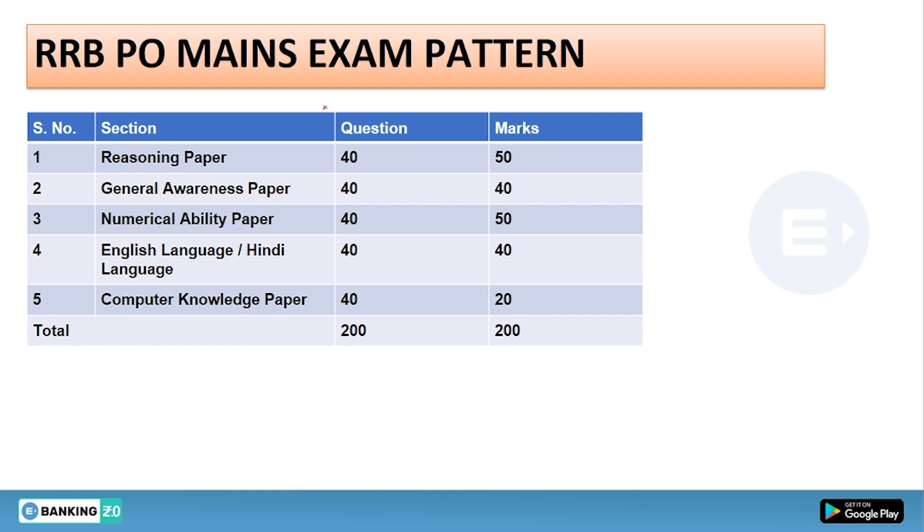First of all, you should know the mains pattern. Look at the mains pattern - in reasoning, you will be given 40 questions for 50 marks. For GA, I believe the GA segment will be a game changer for those aspirants who want to clear this examination, because it is the only difference between prelims and mains examination. Computer knowledge, everyone knows about it.